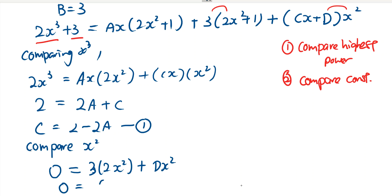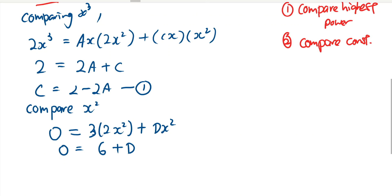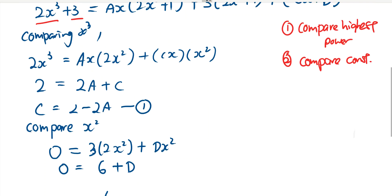So this would mean that 0 is equal to 6 plus d, and then d would be equals to negative 6. So now we have another unknown.